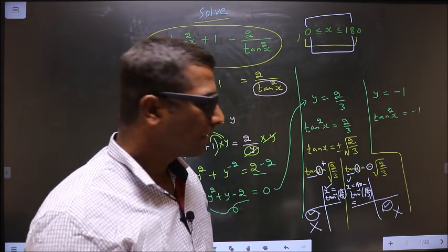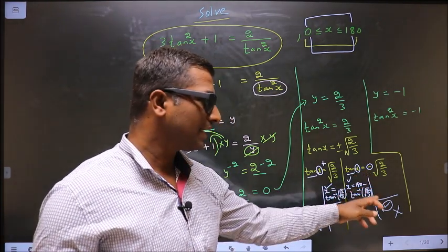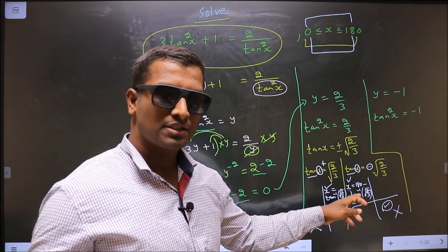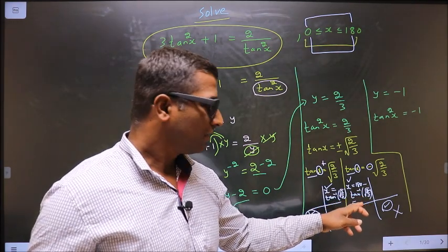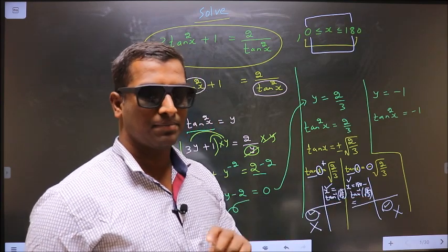Remember this. The negative sign is used only for selecting the quadrants. Once quadrants are selected, do not place negative sign here again. Remember that.